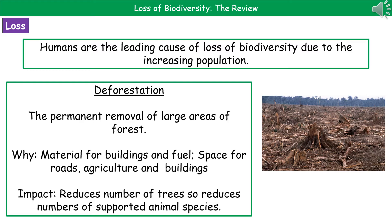The reason that we do this is because trees give us material for building and for fuel. It also means that we're clearing these areas of forest, which then gives us the space we need to build roads, new farms and agriculture, or for building on. However, the impact of doing this means we've reduced the number of trees, and as soon as you reduce the number of trees, you've potentially reduced the number of animals supported by those trees because they may use them for food or for shelter. So there's that knock-on effect that we see.